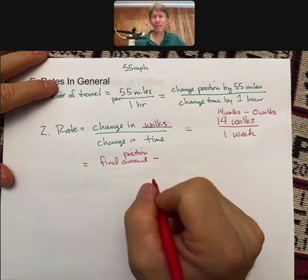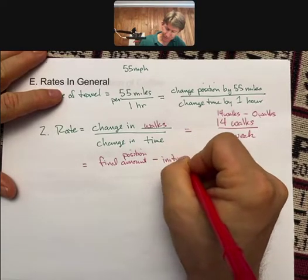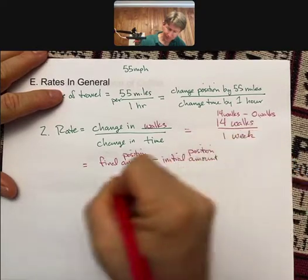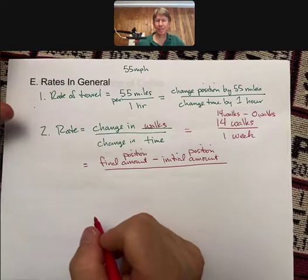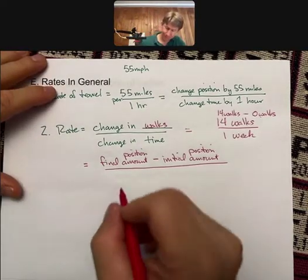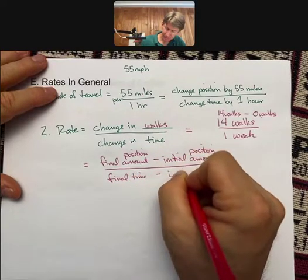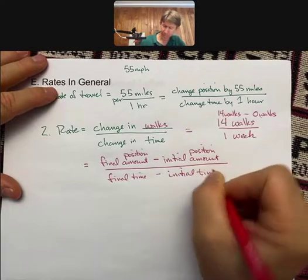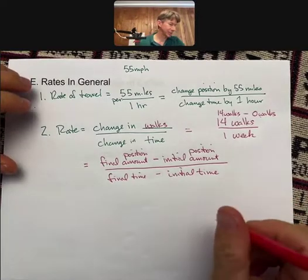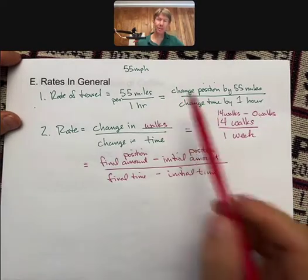It introduces the idea that you've got both a starting point and an ending point. A rate is going to have a final amount or position or something, and typically in all rates, including scientific rates, you'll have an initial amount or position. We always do final minus initial because that's where you end up. You also have a final time and an initial time. That's how you calculate a rate.